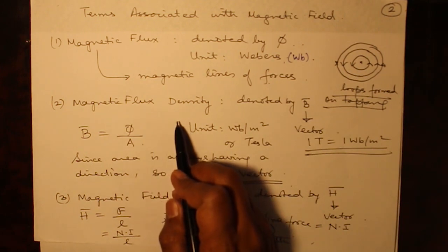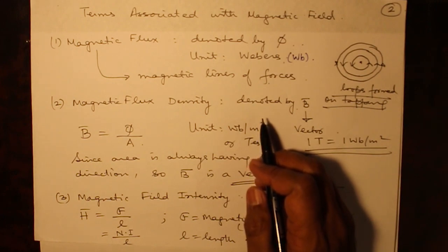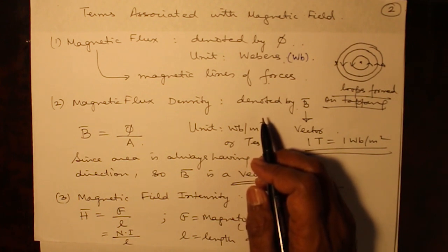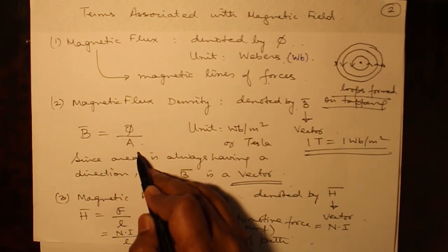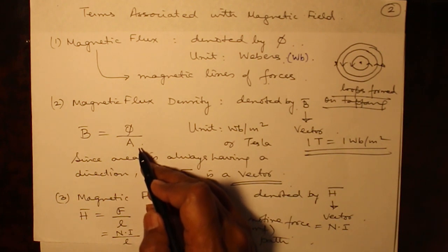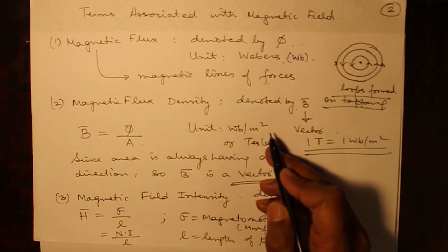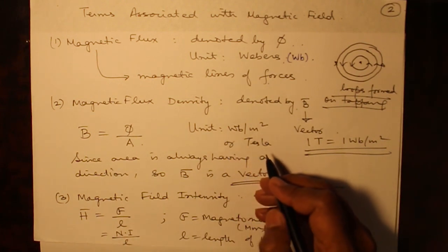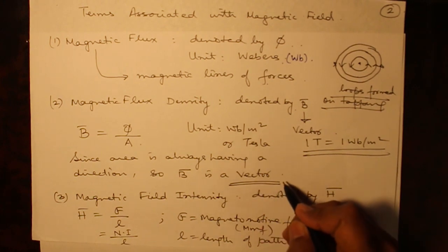Magnetic flux density is denoted by B. It is the magnetic flux per unit cross-sectional area through which it is passing, provided the area under consideration is at right angles to the flux passing through it. So B equals phi over A. Since area is a vector quantity, dividing a scalar by a vector gives a vector, so B is a vector. Its unit is Weber per meter square, and one Weber per meter square is also equal to one Tesla.